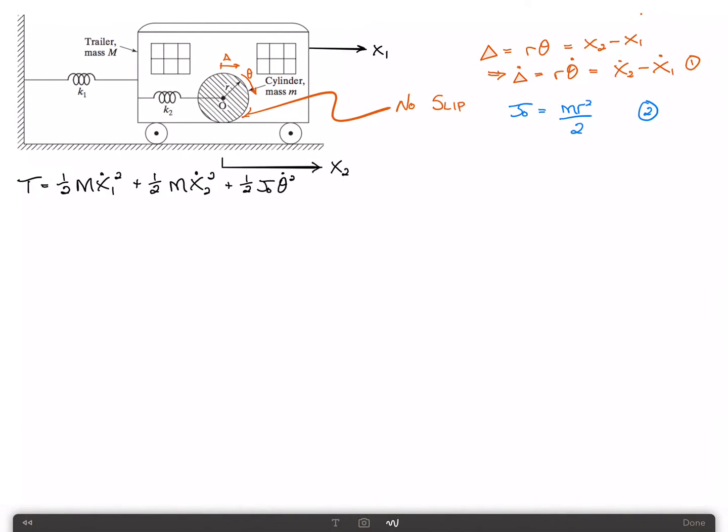And now we can simplify the kinetic energy as follows. That's equal to one-half times M x1 dot squared plus one-half little m x2 dot squared plus j0 from here. We can write as m r squared divided by 2 times a half, which is m r squared divided by 4, times x2 dot minus x1 dot divided by r quantity squared. That comes from equation 1.